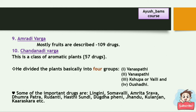Rajanikandu divided plants into 4 groups: Vanaspati, Vanaspatya, Shupa or Valli, and Aushadhi. Some important drugs according to Rajanikandu are Langili, Somavalli, Amrita Shrava, Dhumrapatra, Rudanti, Hastish Sundi, Tudga Feni, Jandu, Kulanjan, Parashkara, etc.